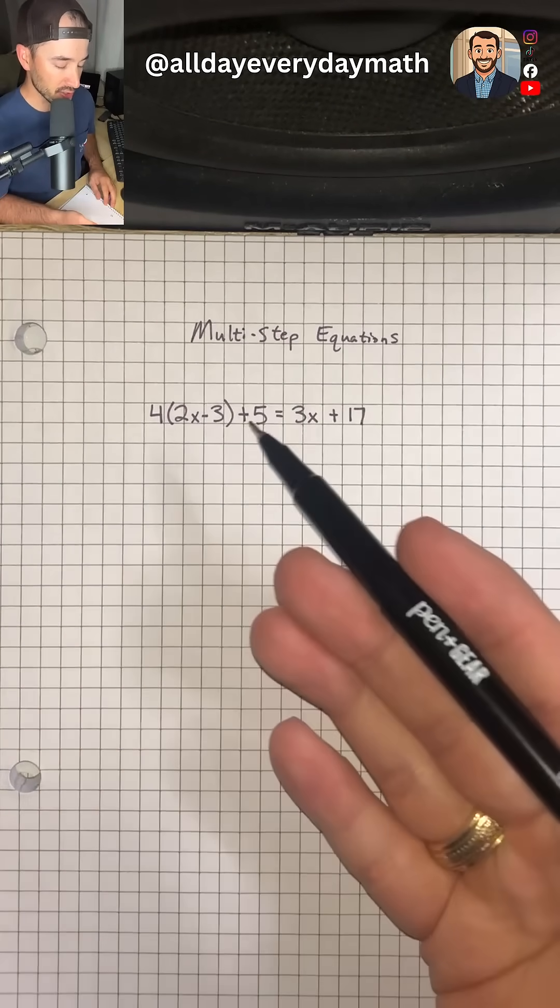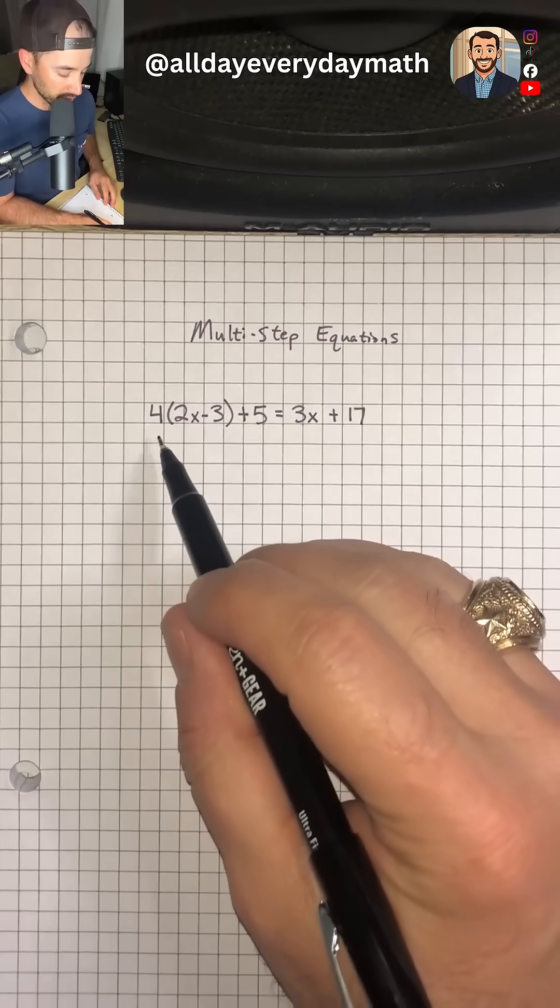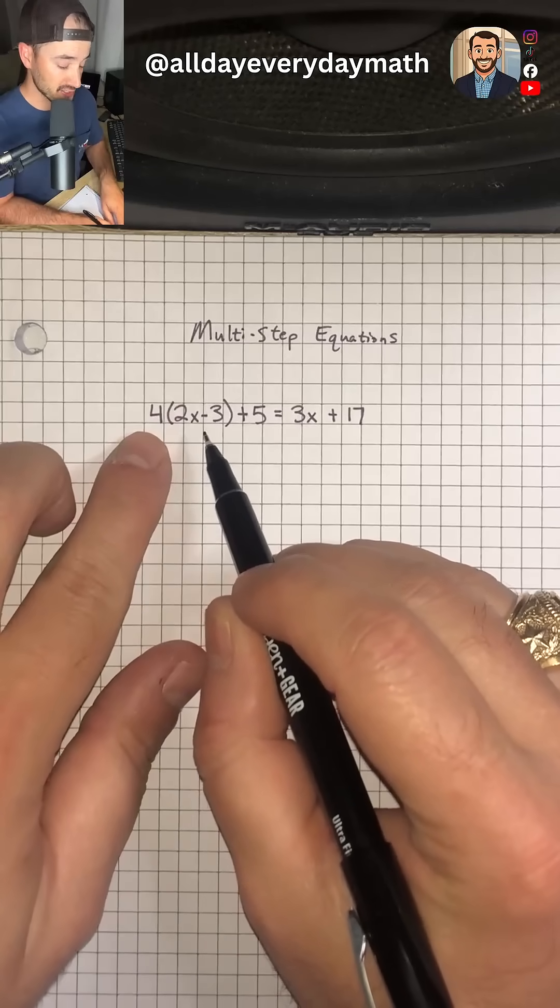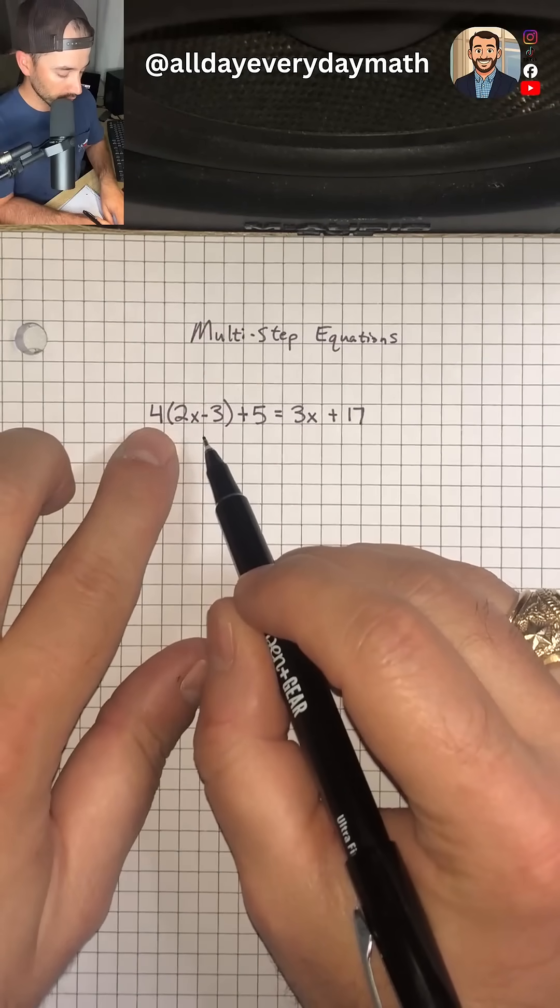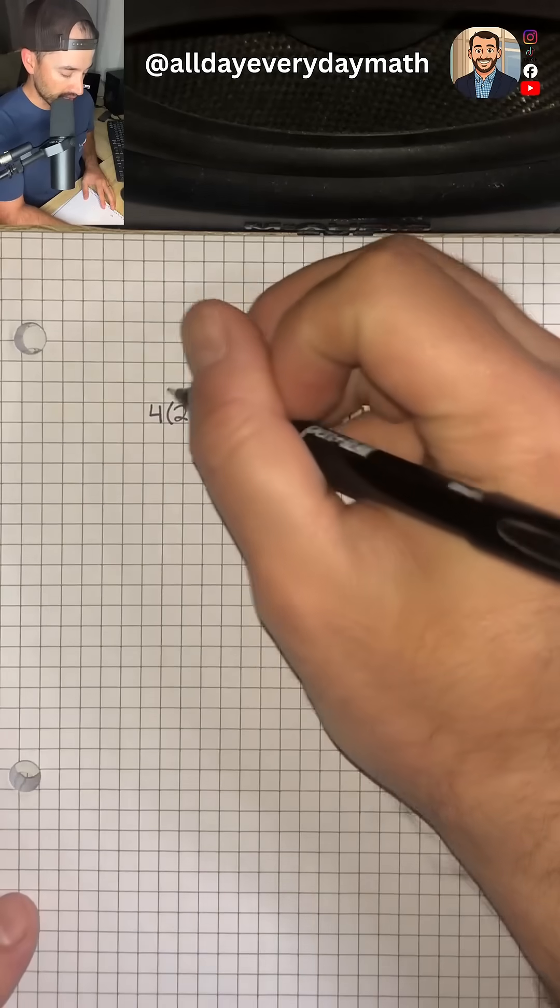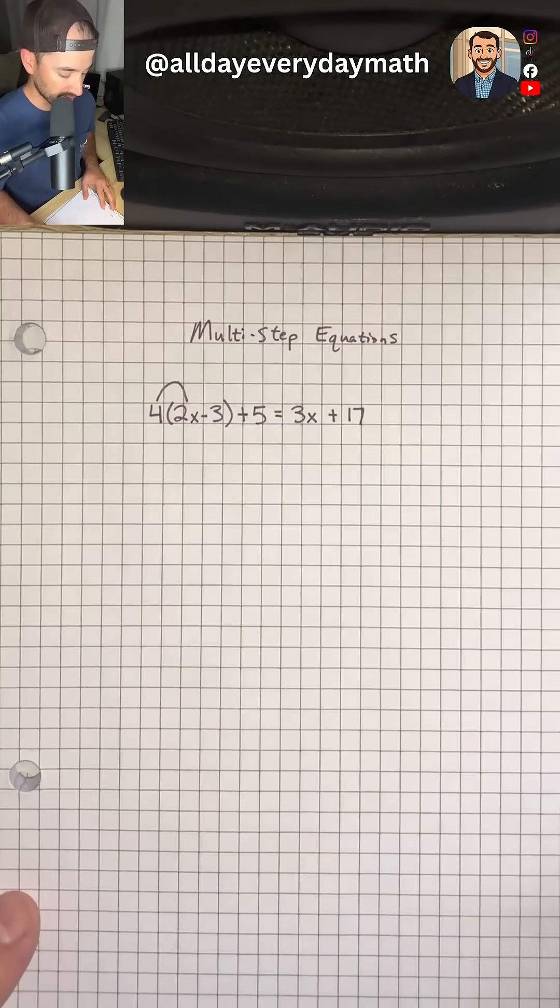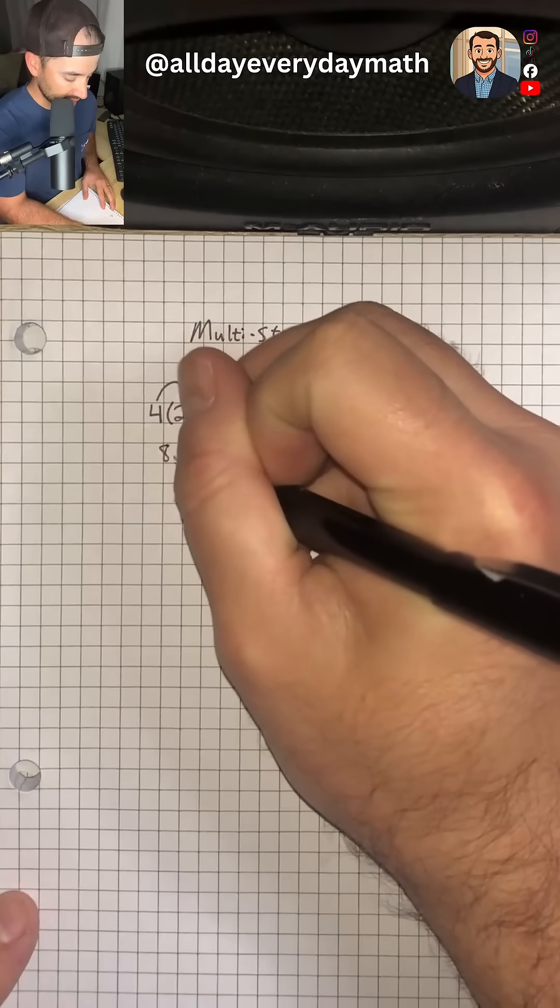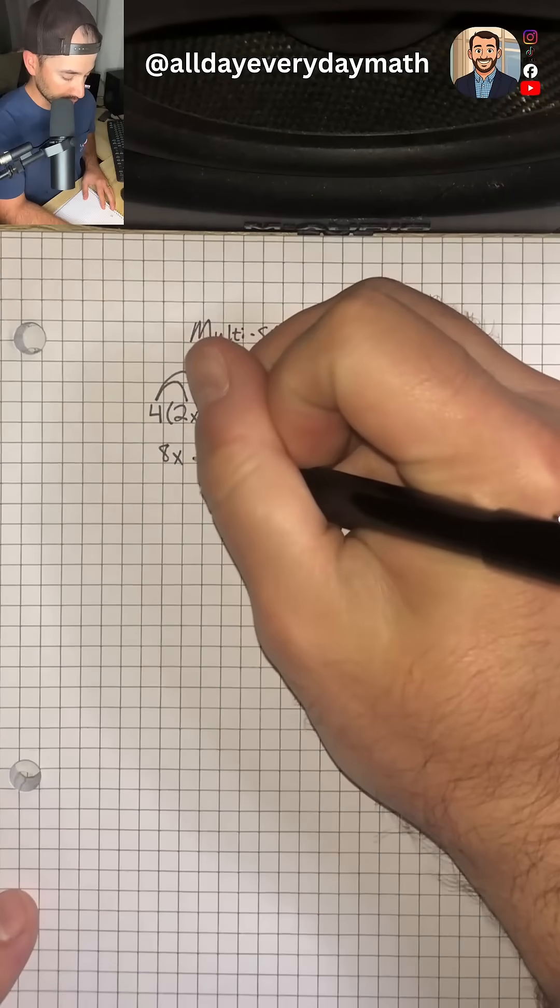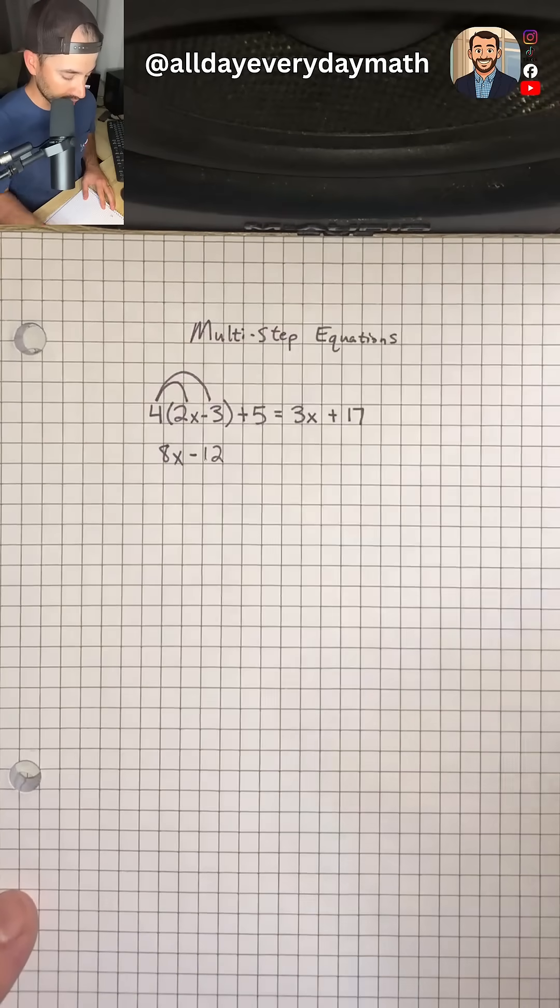So the first thing, especially with multi-step equations, is I'm looking for parentheses like we have here. And what we're going to do first is distribute our 4 to both terms inside the parentheses. So when we do that, we'll do 4 times 2x, which is 8x, and then 4 times negative 3, which is negative 12. So we're going to put minus 12.